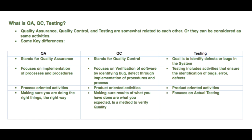QA stands for quality assurance, QC stands for quality control. Testing's goal is to identify defects or bugs in the system. QA focuses on the implementation of processes and procedures.